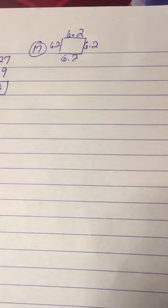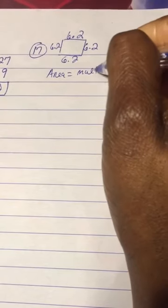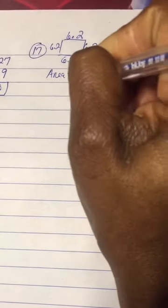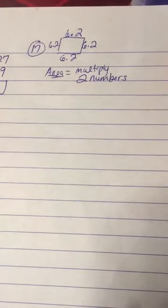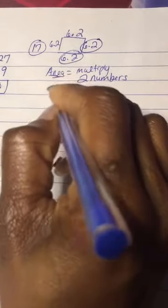They're asking you for the area. Area means multiply two numbers. So you have this number and this number—you don't multiply all of those numbers, just take two of them.